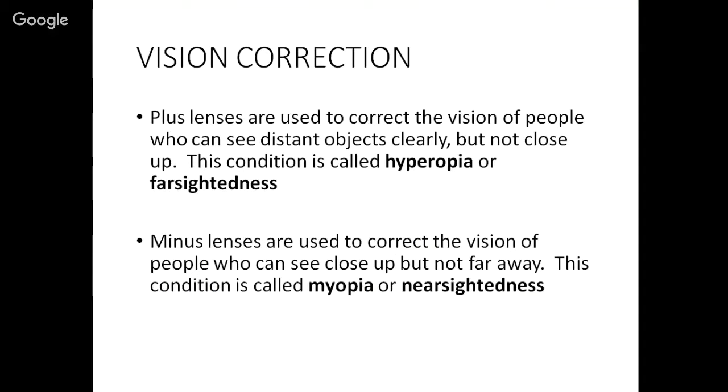Now plus lenses and minus lenses can be used to correct vision. If a plus lens is used, then that's going to correct the vision of somebody that can see distant objects clearly but not close up. And that condition is called farsightedness or optometrists like to use a fancy word called hyperopia to describe that. And if it's a minus lens that's doing the correcting, that means that the person that needs that lens can see up close but they can't see far away. And in that case, the person is nearsighted or the fancy word to describe that would be myopia.